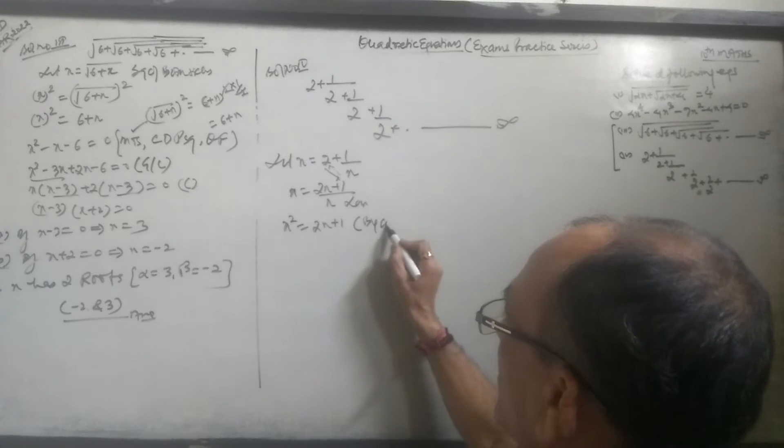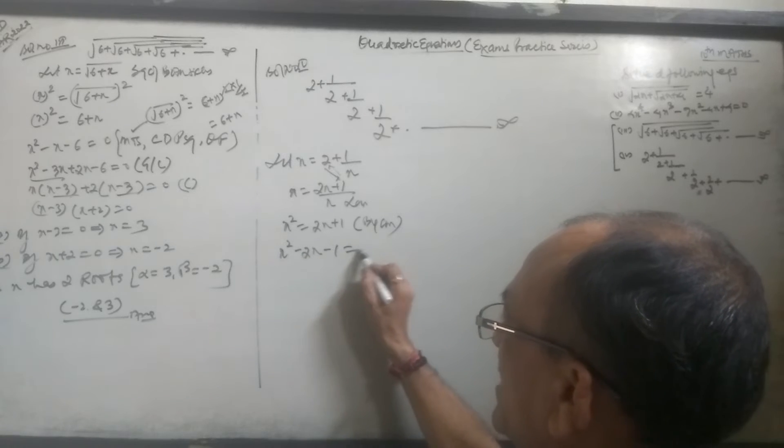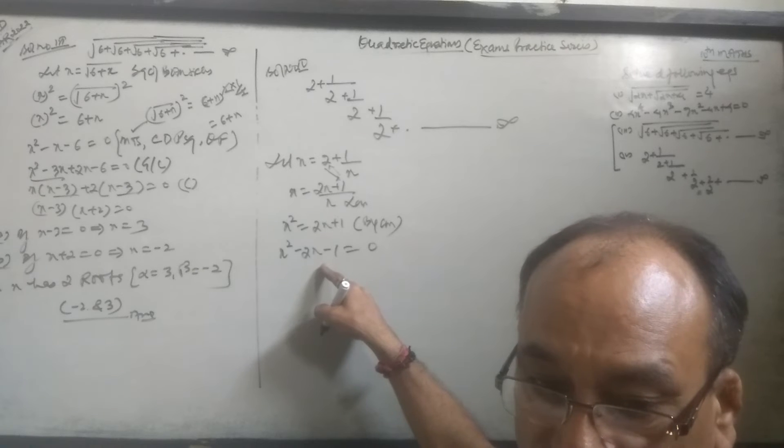By cross multiplication: X² - 2X - 1 = 0.